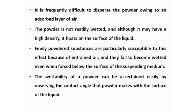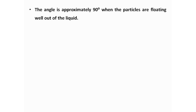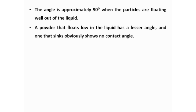The wettability of a powder can be determined by observing the contact angle the powder makes with the surface of the liquid. The contact angle is approximately 90° when particles are floating at the surface of the liquid. A powder floating at a lower level has a contact angle less than 90°, and a powder that sinks to the bottom of the dispersion medium has no contact angle with the dispersion medium.